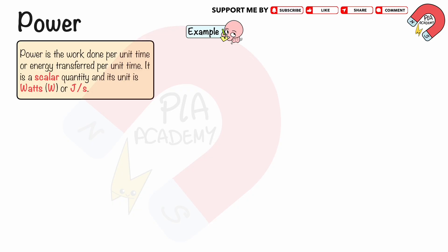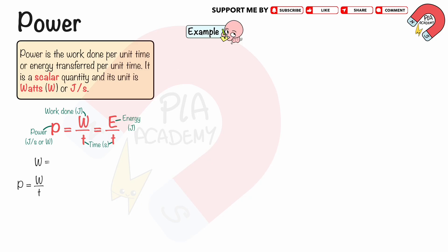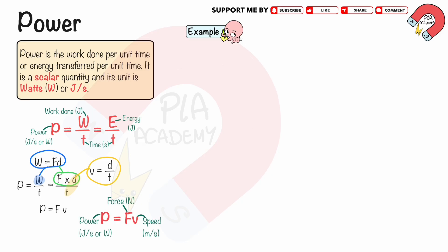Power is the work done per unit time, or energy transferred per unit time. It is a scalar quantity, and its unit is watts or joules per second. The formula of power is P equals W divided by T, or E divided by T. Where P is the power in watts, W is work done in joules, T is time in seconds, and E is the energy in joules. If we substitute work done W equals force F times displacement D into P equals W over T, where D over T is speed V, then the power P equals F times V.